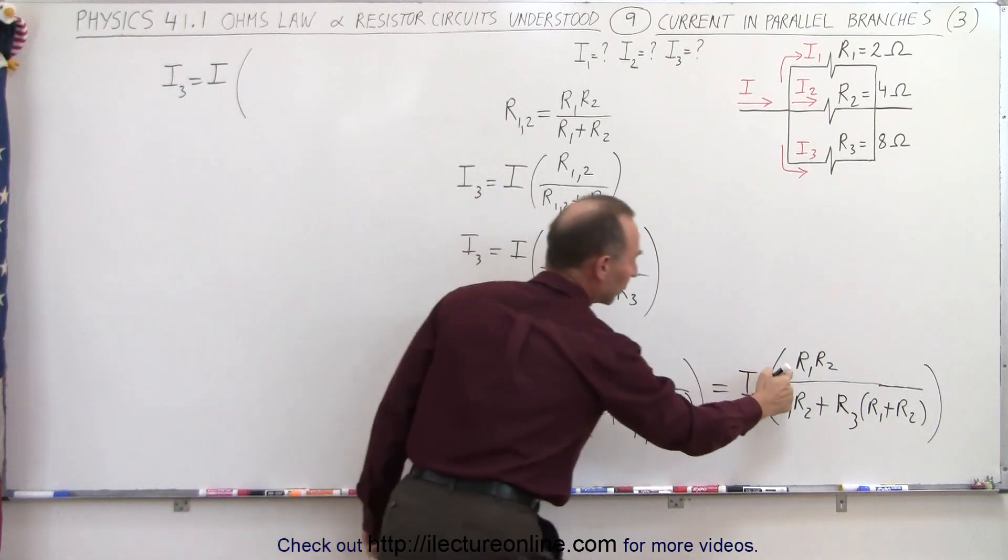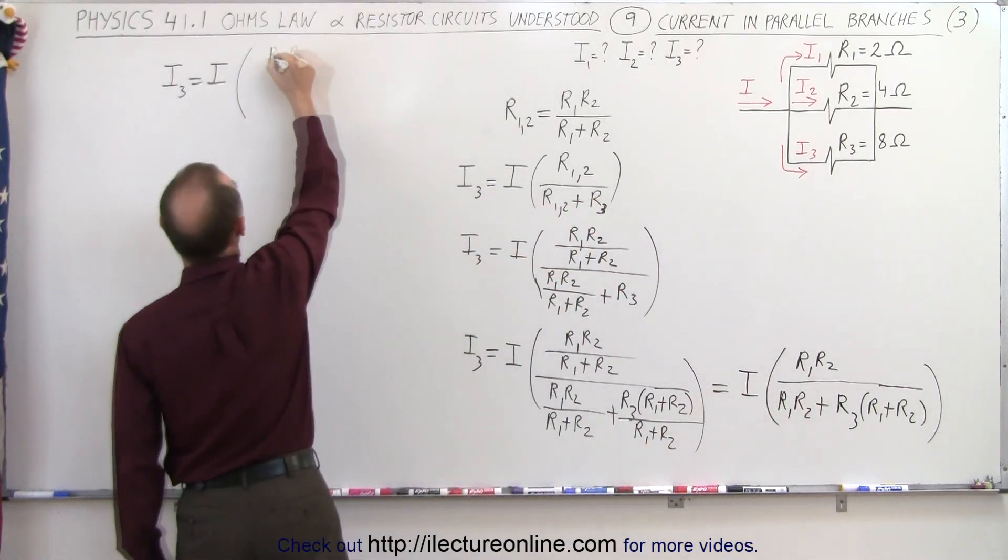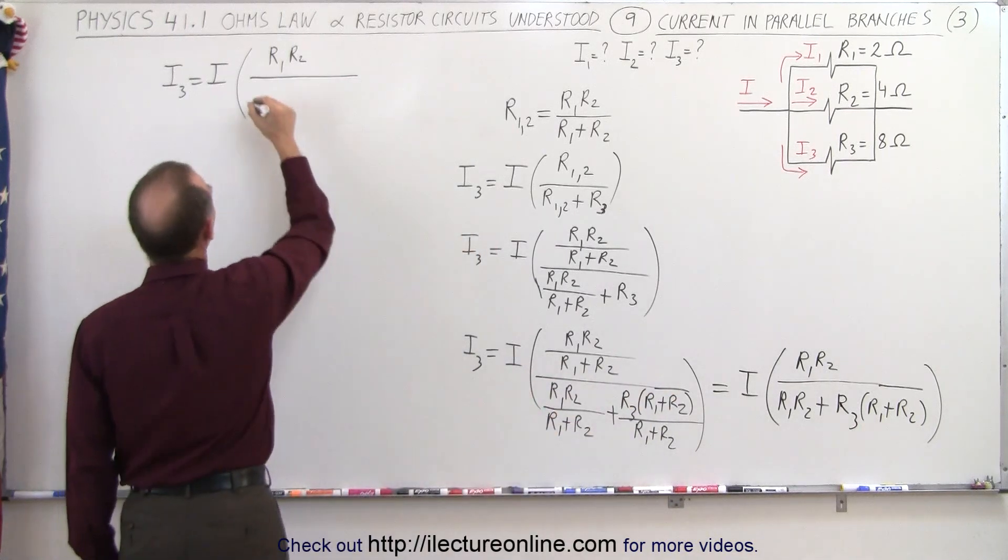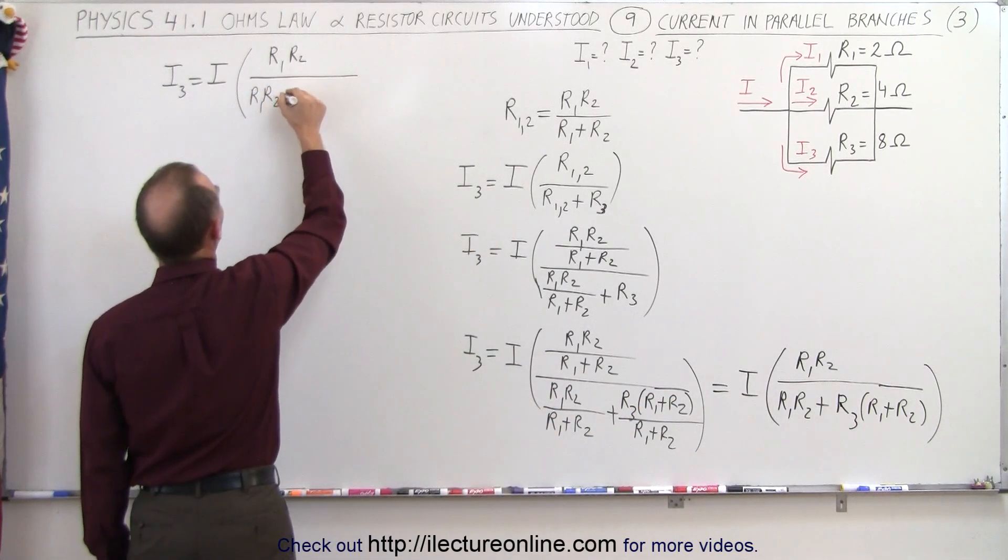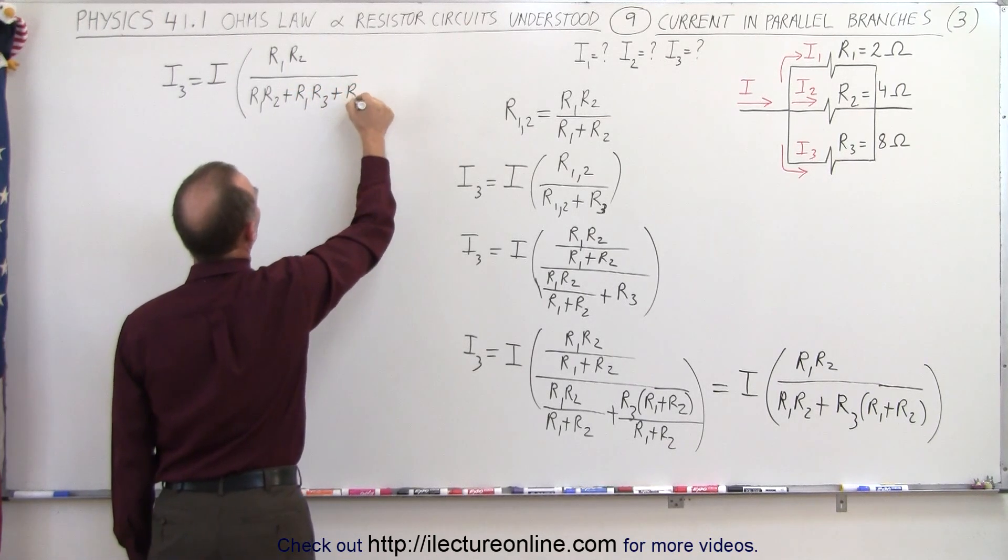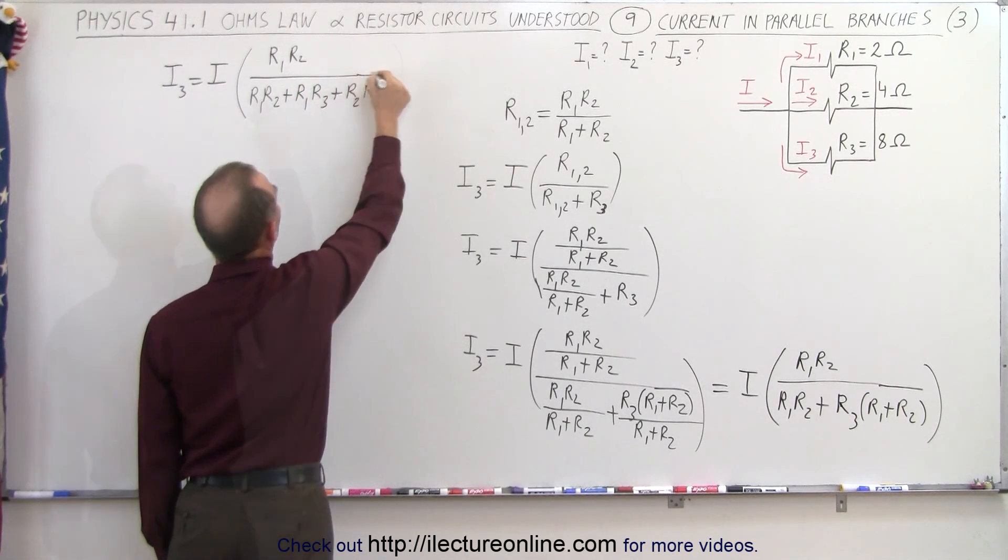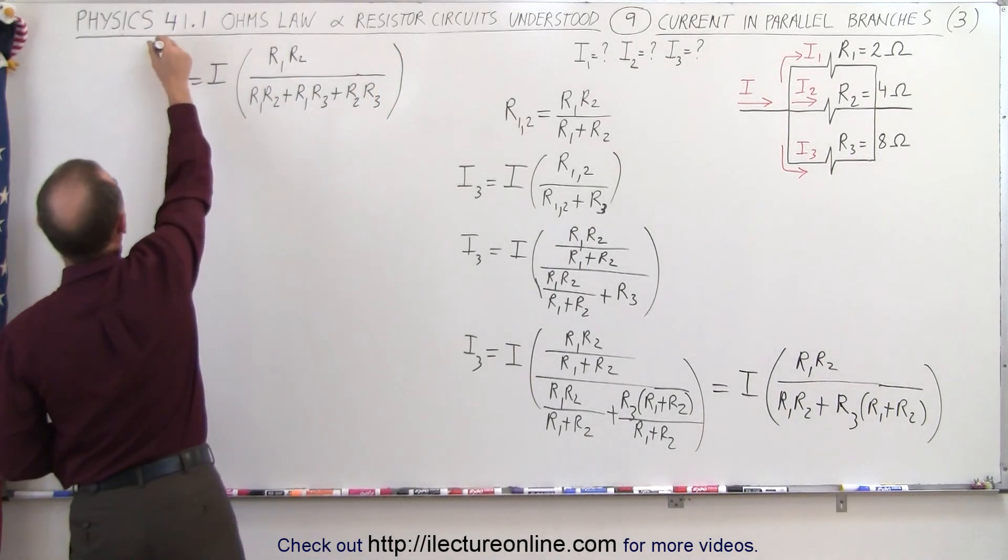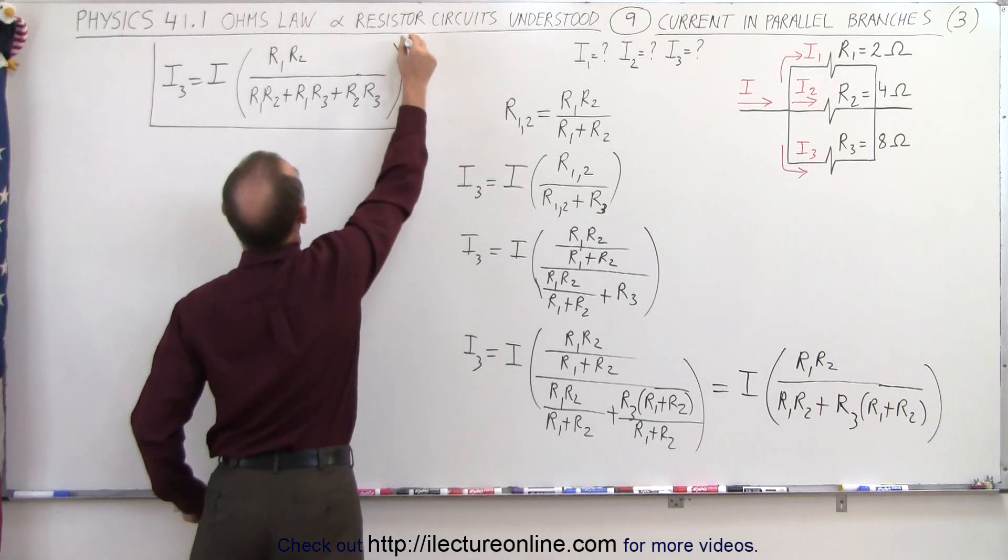And in the denominator, if we multiply everything out, we'll get R1 times R2 plus R1 times R3 plus R2 times R3. And that is the final form for finding the current in the third branch.